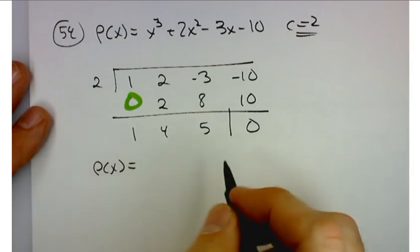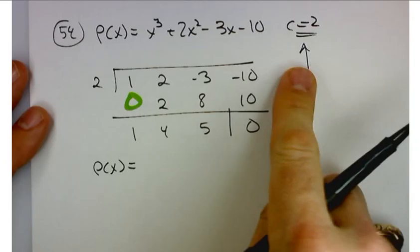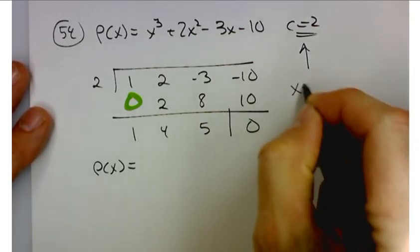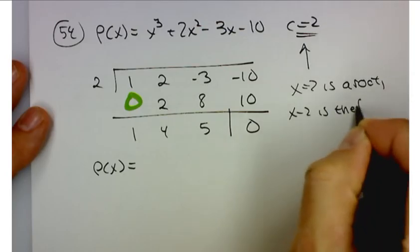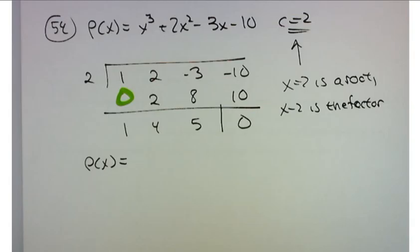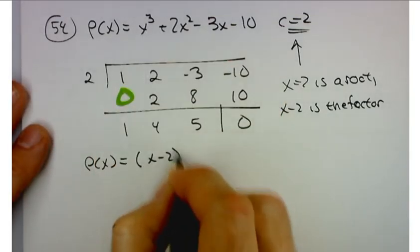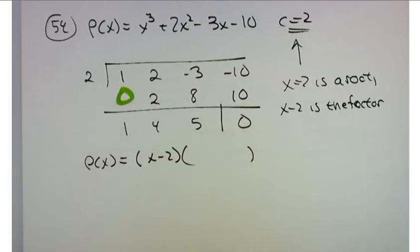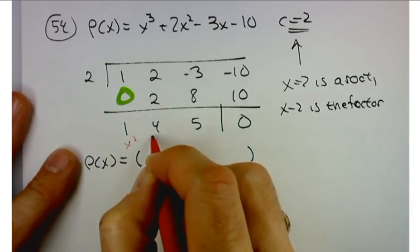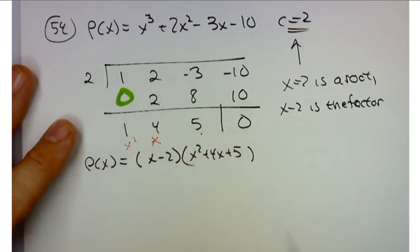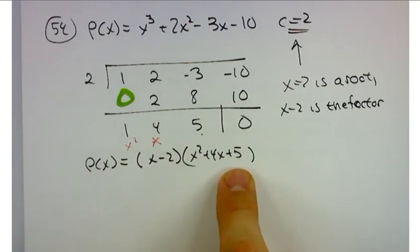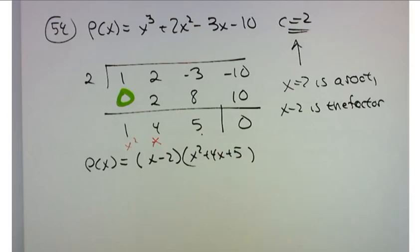Since x equals 2 is a root, the corresponding factor is x minus 2. That tells me I can rewrite p(x) as x minus 2 times x² plus 4x plus 5. And that quadratic won't factor anymore — it actually has complex roots — so this graph is only going to cross the x-axis once, at x equals 2.